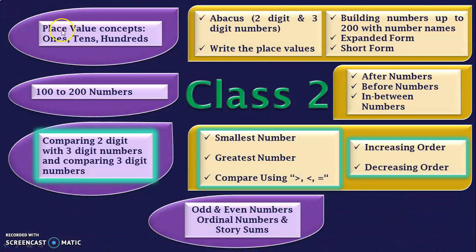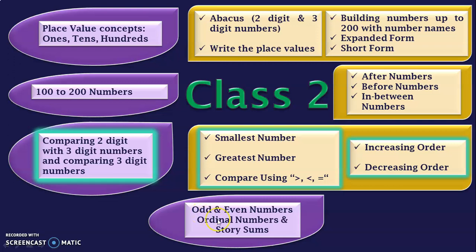These are the learning outcomes in class 2 under number concepts. The first learning outcome is place value concepts. As in class 2 we will be dealing with 3-digit numbers, we will be looking at the place values 1s, 10s and 100s. The next learning outcome is number activities like after numbers, before numbers and in between numbers, on the numbers from 100 to 200. The next learning outcome is comparing 2-digit numbers with 3-digit numbers. The other learning outcomes are odd and even numbers, ordinal numbers and story sums, which means problem sums.